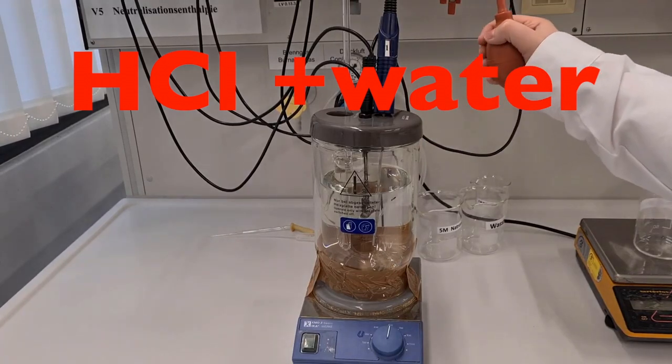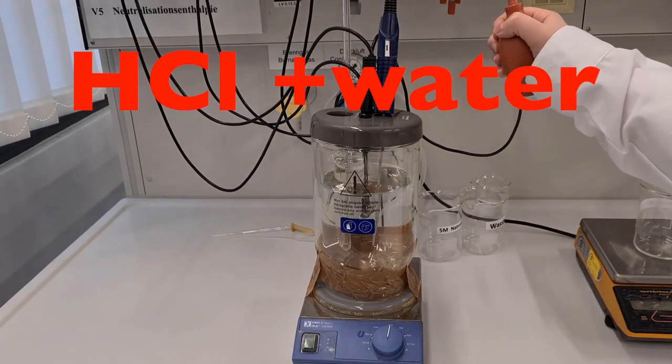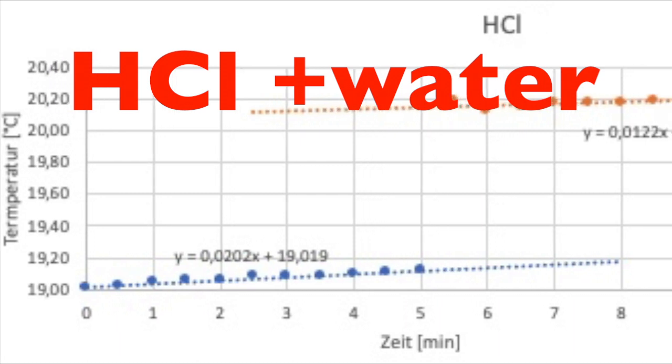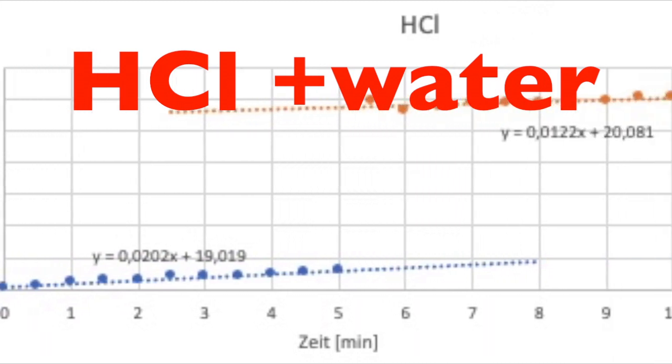60 grams of an 8 molar hydrochloric acid are injected into 790 grams of water. The determination of the pre and post-period is carried out here analogously to the previous experiments.